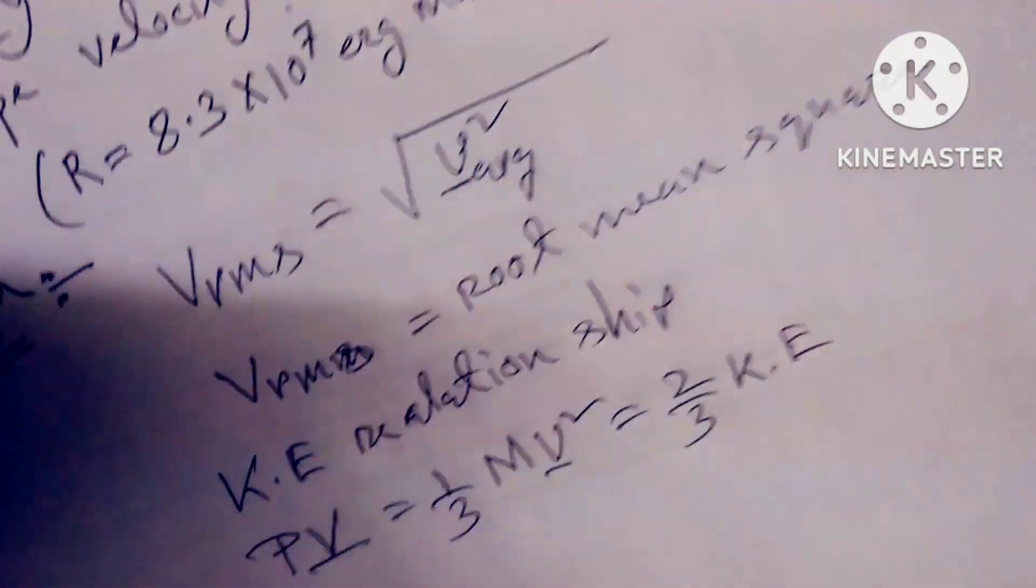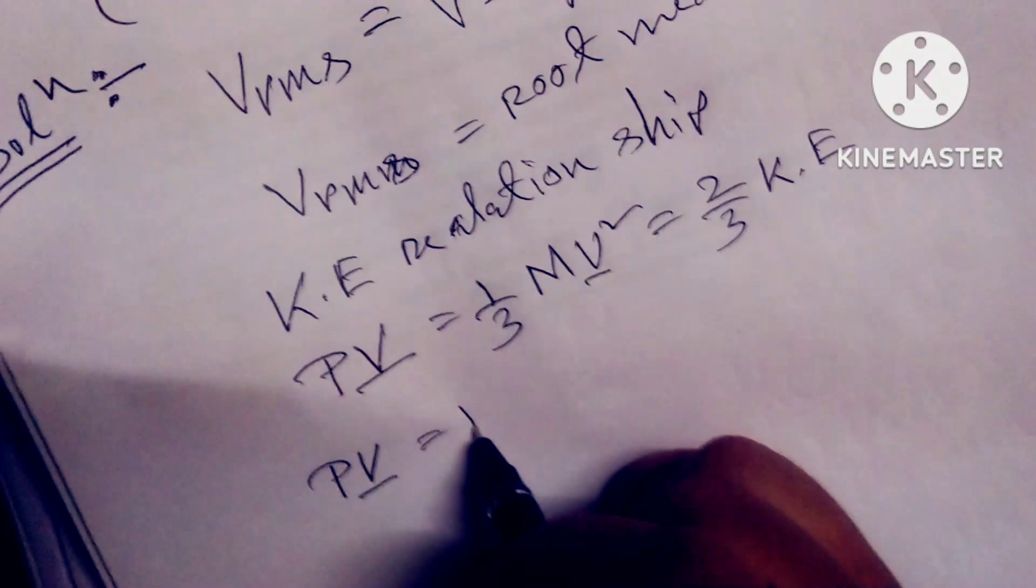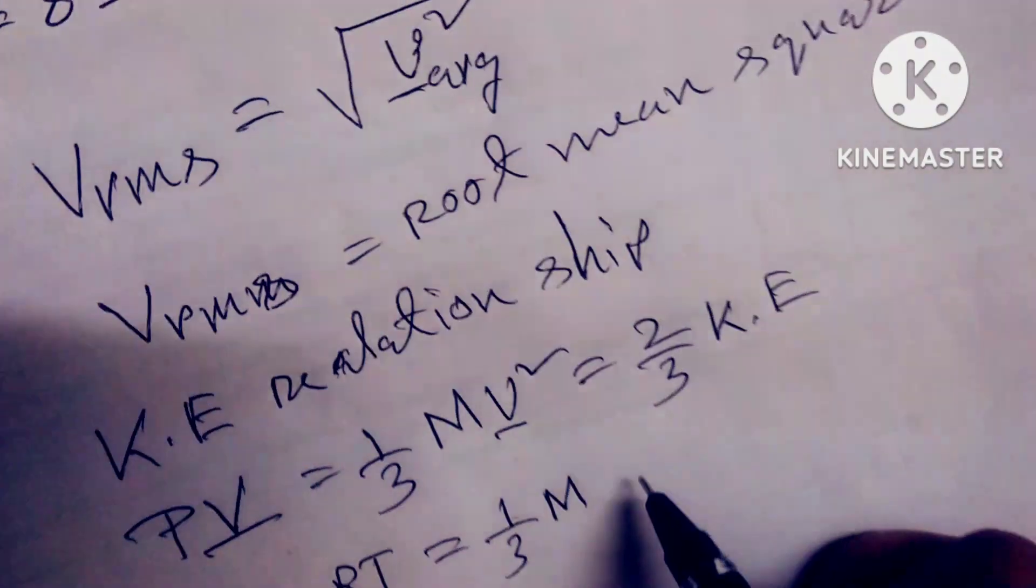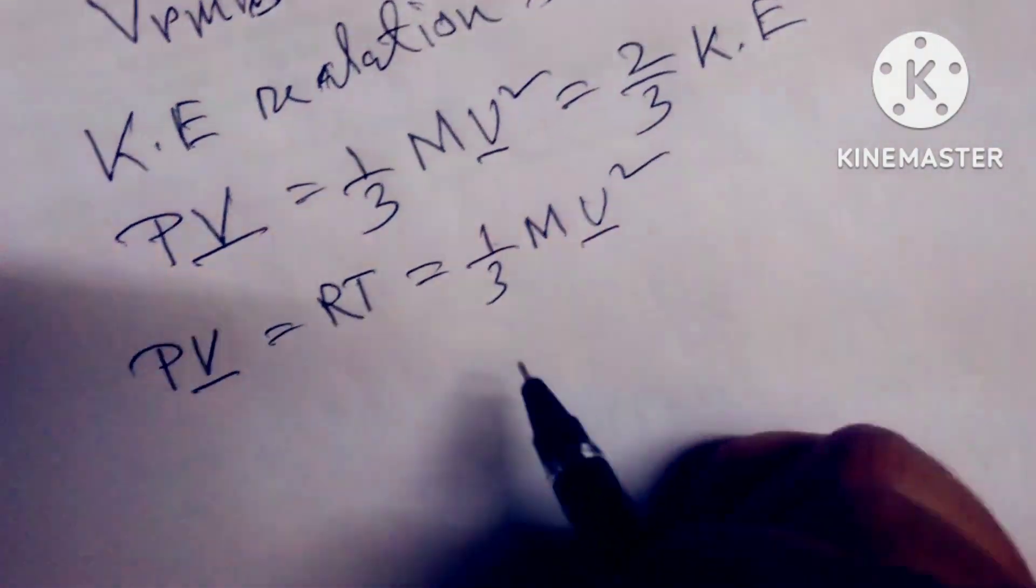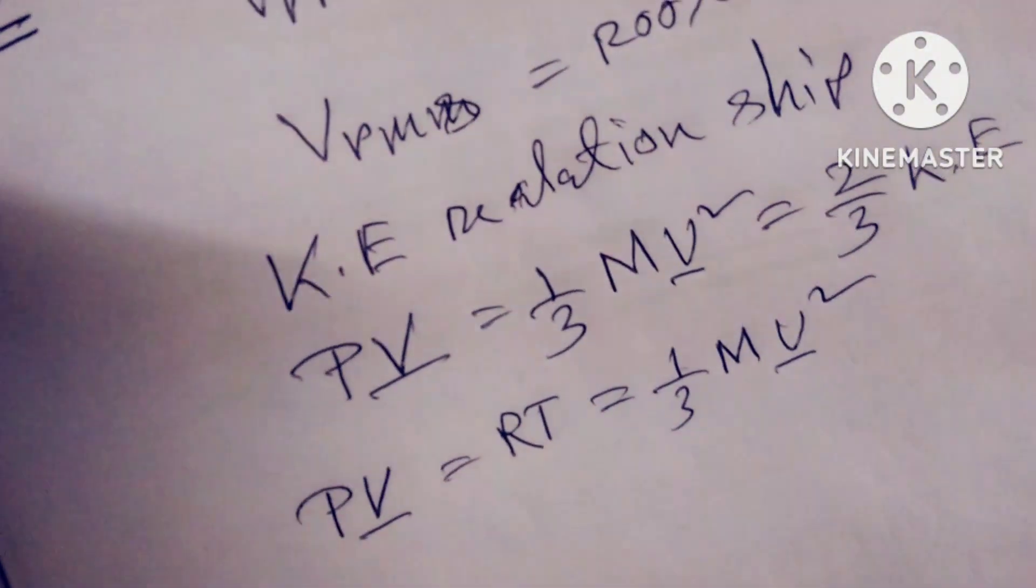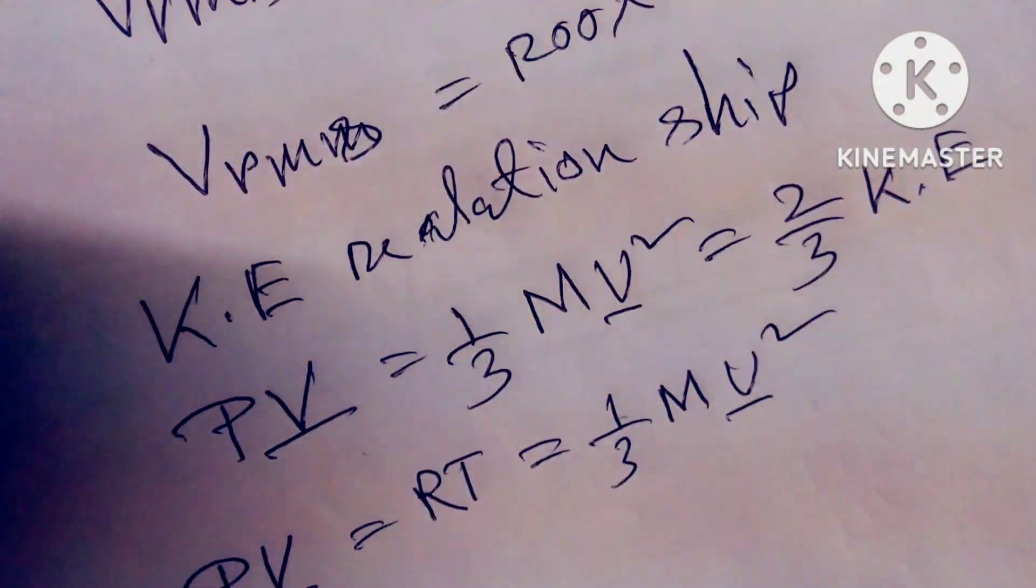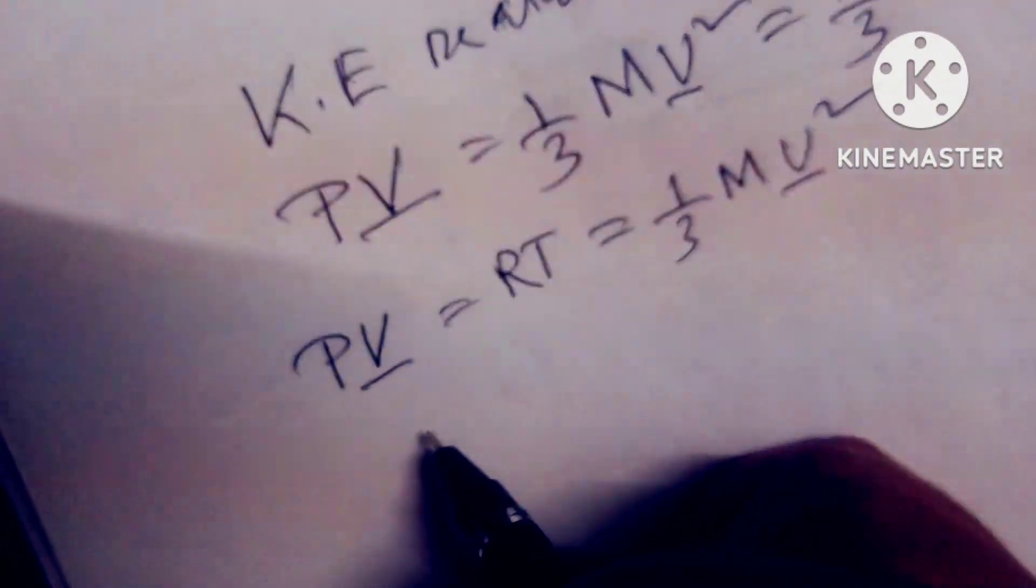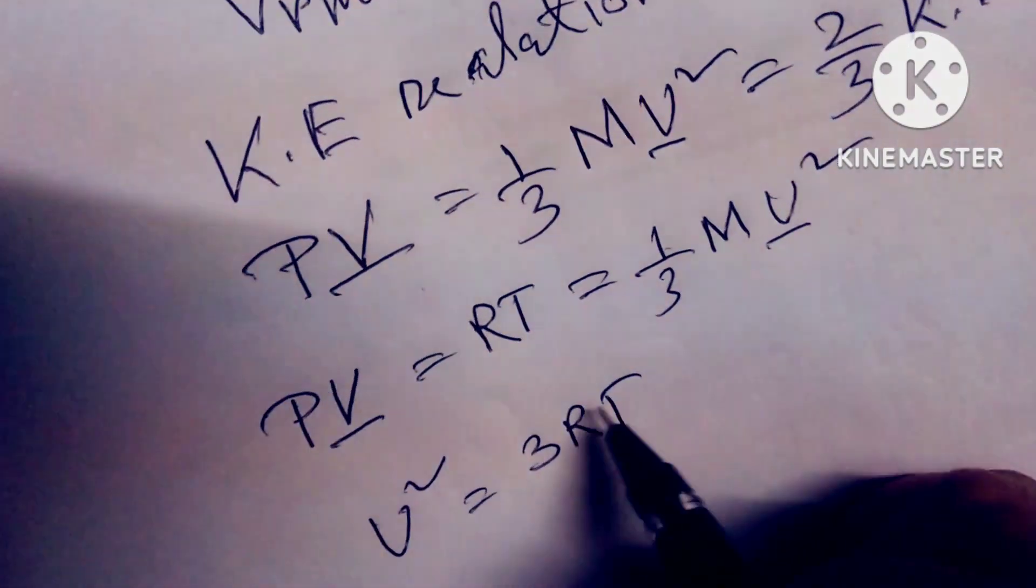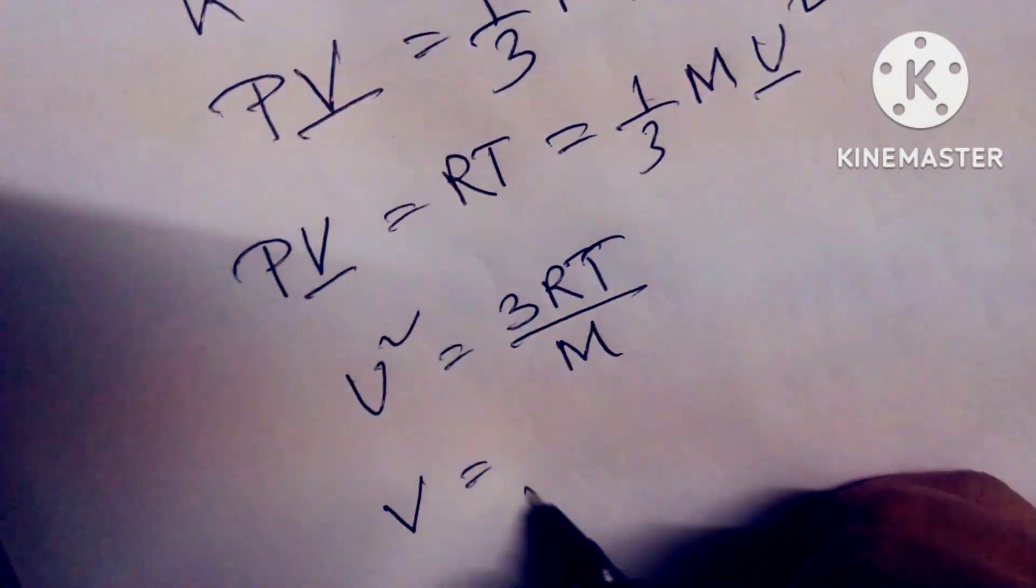PV̄ is equal to RT, this is the gas law, and it equals one-third m times v̄ squared. So R is the universal gas constant and T is temperature. We see that V² equals 3RT divided by M.